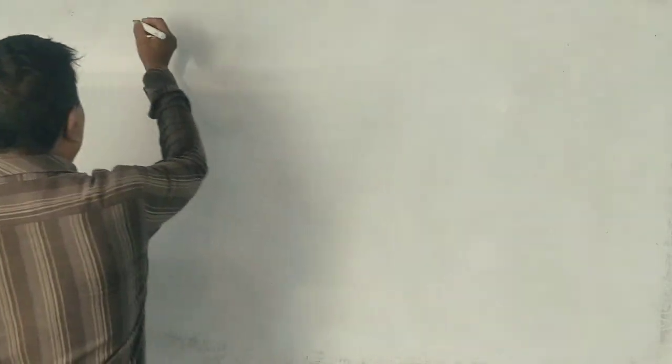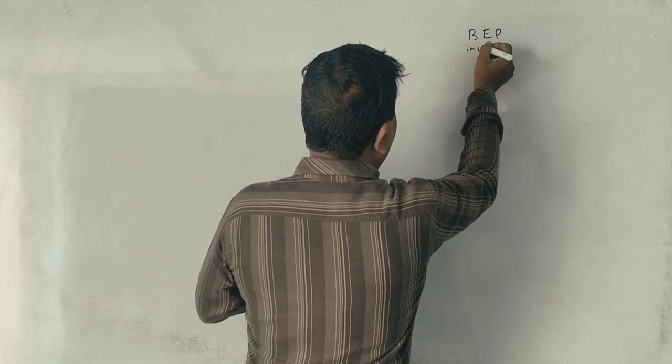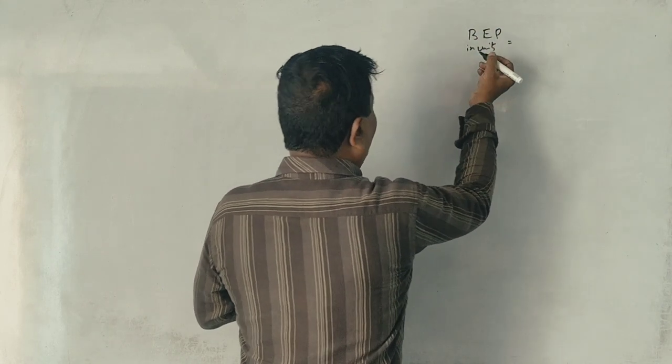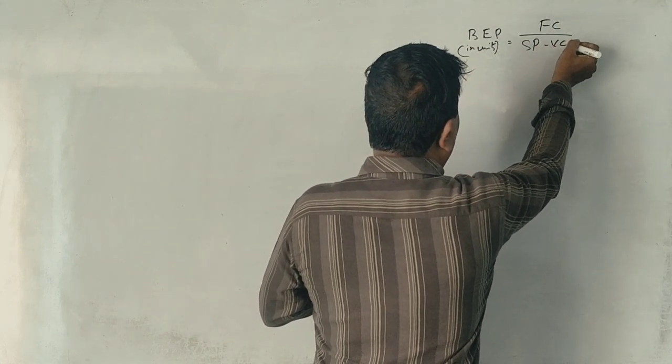First, break-even point. Here we have to find break-even point in units. Just one formula: fixed cost divided by selling price minus variable cost per unit.